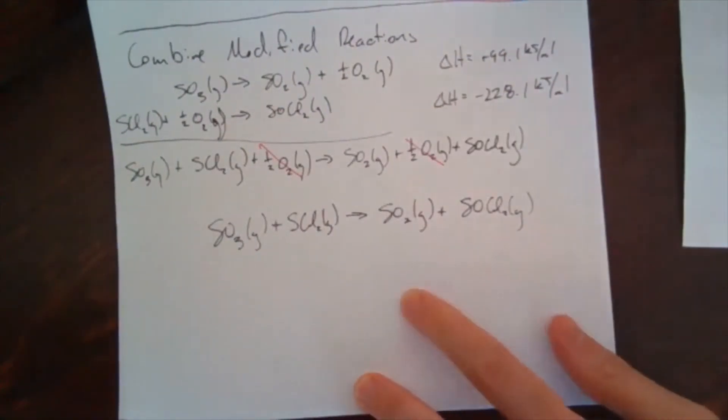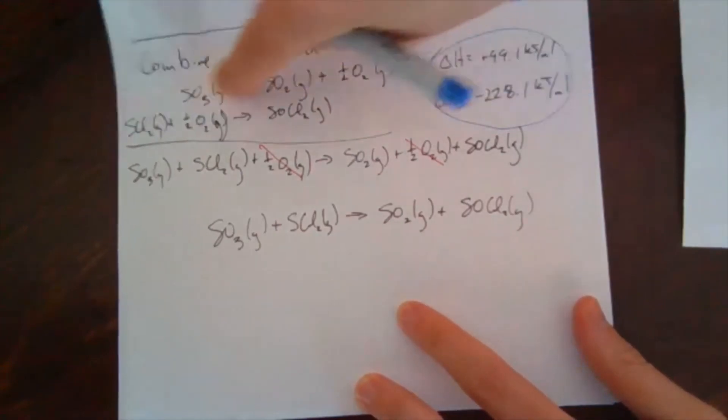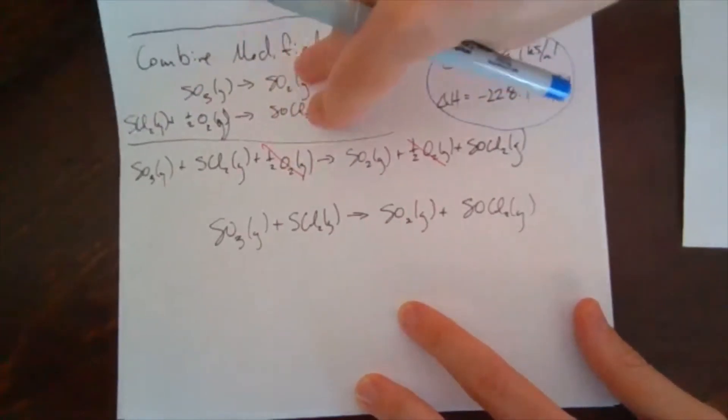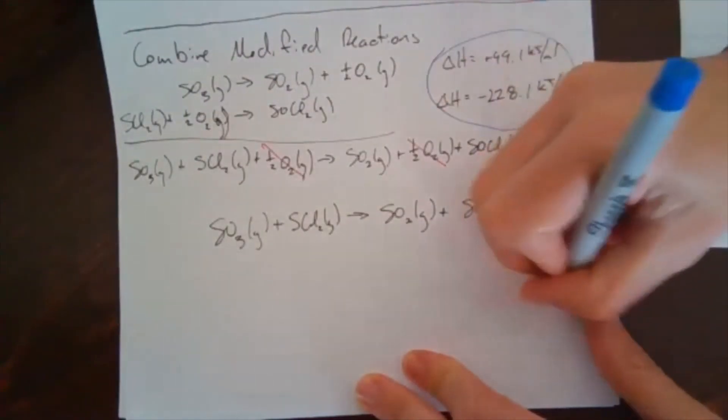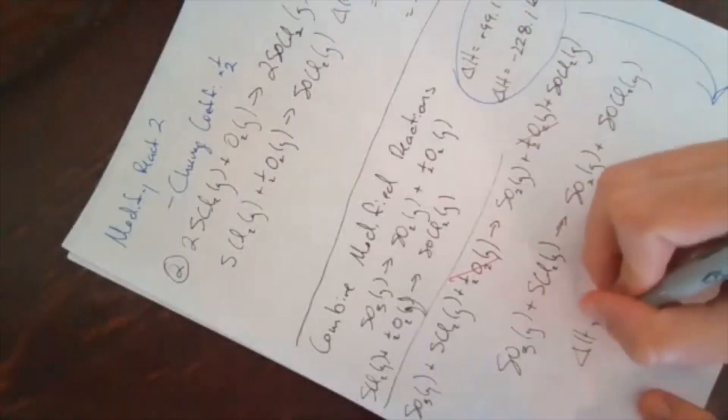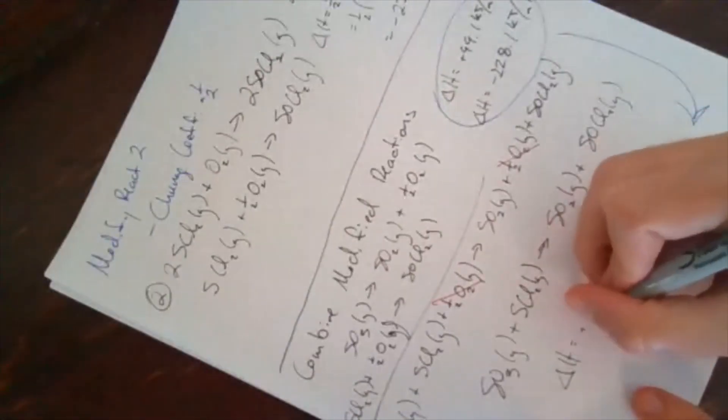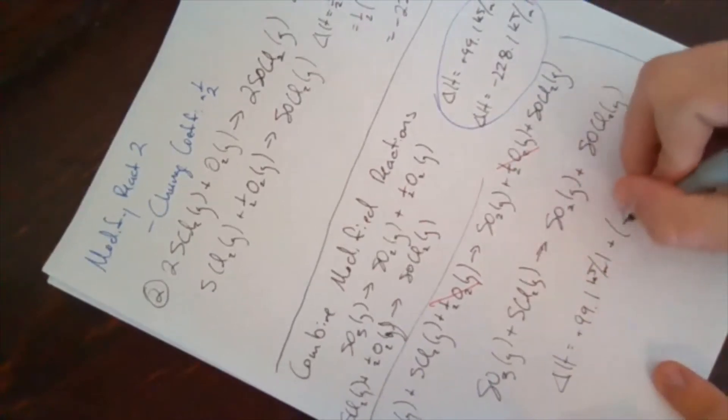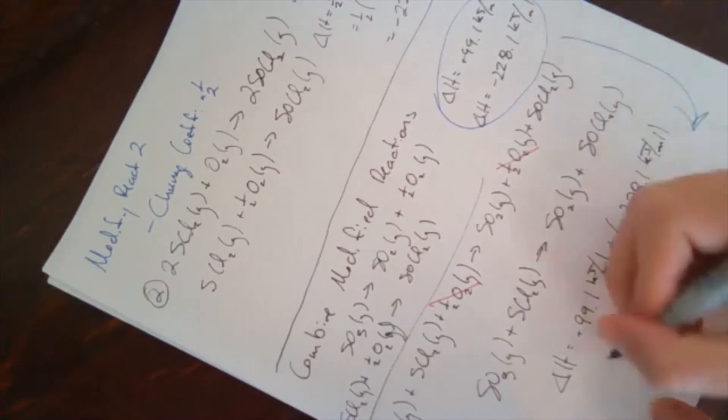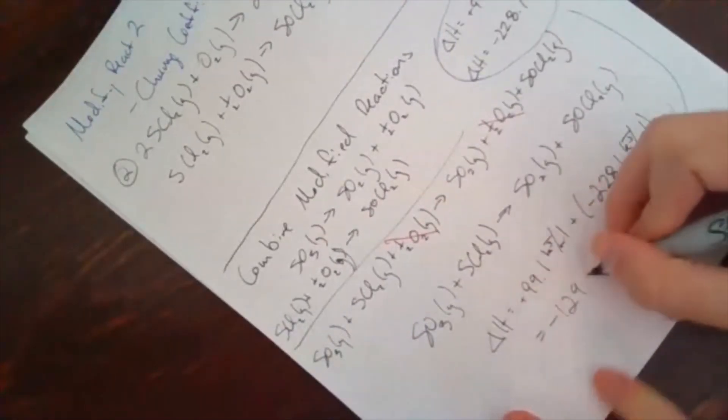So the thing we want to take from it then is what is the delta H? And it's going to come from adding these together. Because if these were the reference reactions, adding those together gives you this. So delta H for this reaction is the sum of those two values. So that tells me that delta H is equal to positive 99.1 kilojoules per mole plus negative 228.1 kilojoules per mole. Which is equal to negative 129 kilojoules per mole.